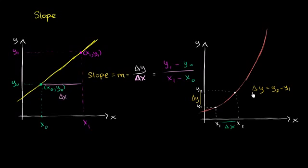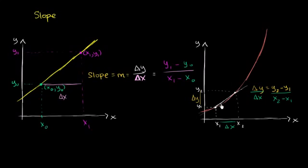So our change in y over this interval is y₂ minus y₁, and our change in x is x₂ minus x₁. Just like that, we figured out the rate of change between these two points — or the average rate of change of the curve between x equals x₁ and x equals x₂. But we've also figured out the slope of the line that connects these two points. And what do we call a line that intersects a curve in exactly two places? We call that a secant line.